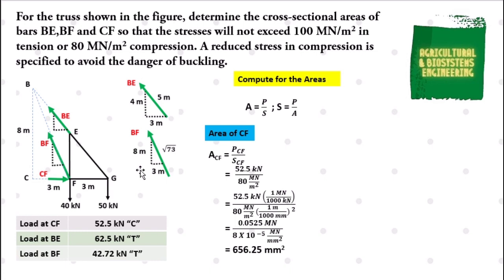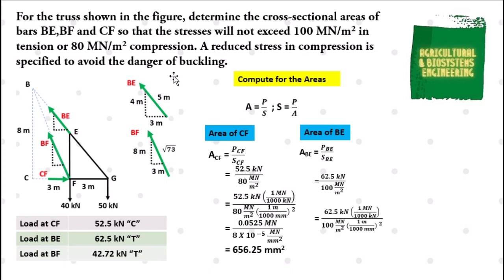Next, we solve for the cross-sectional area of BE. Area of BE equals load at BE divided by its stress: 62.5 kN divided by 100 MN per square meter. We use 100 MN per square meter because the load at BE is tension. Converting units the same way as before — 0.0625 MN divided by 1×10⁻⁴ MN per square millimeter — the cross-sectional area of BE is 625 square millimeters.